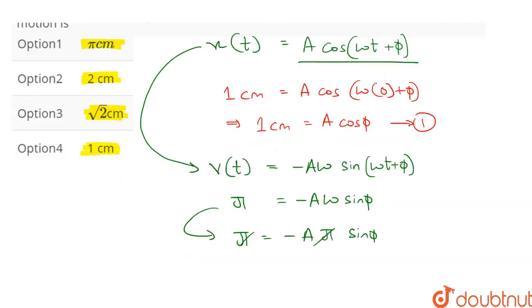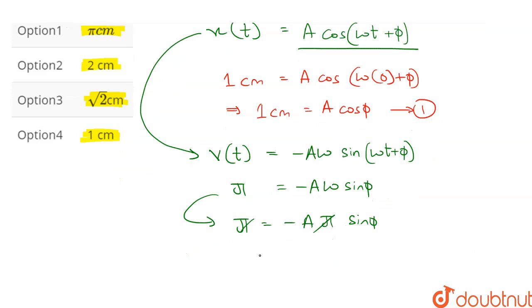π and π are cancelled. So we get -1 = A sin φ. Let this be equation 2.